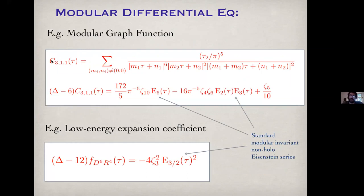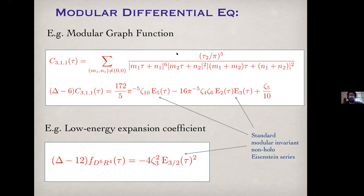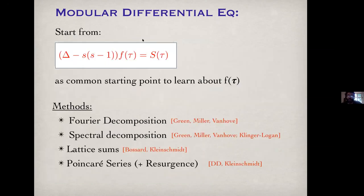For the C311 modular graph function, the Laplace equation looks like (Laplacian minus 6) equals some source. For the D6R4 coefficient, the equation is (Laplacian minus 12) applied to the higher derivative coefficient equals E3 squared, where E denotes the standard modular invariant non-holomorphic Eisenstein series. In both cases the structure is: Laplacian minus an eigenvalue equals some source term. The question is how to solve these equations.